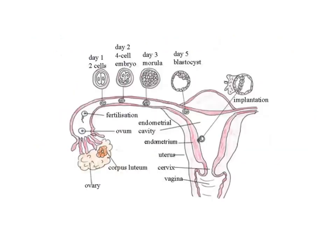Next we're looking at the journey from fertilization up until implantation, which takes a few days. Fertilization takes place inside the fallopian tube. Fertilization will never take place inside the uterine cavity because the development from day one through to day five needs to take place during travel. If the egg got fertilized inside the uterus there wouldn't be enough time for it to develop into a blastocyst — it would have left the uterus by then. So it's important that the embryo has time to travel and develop into a hollow ball of cells before it implants.